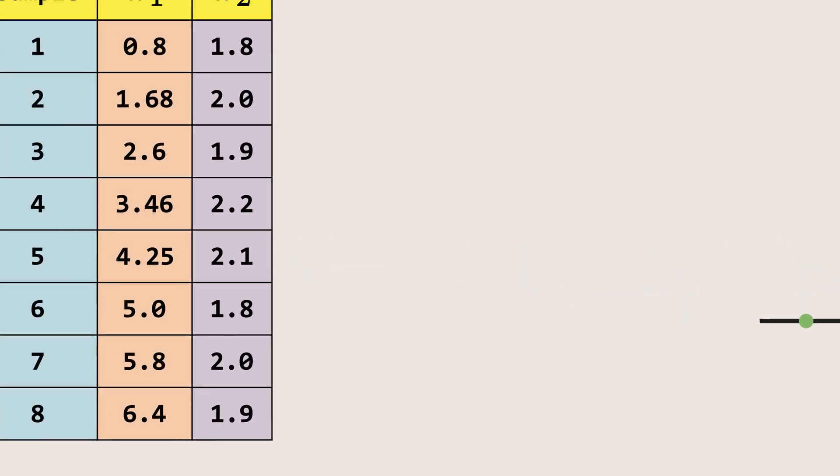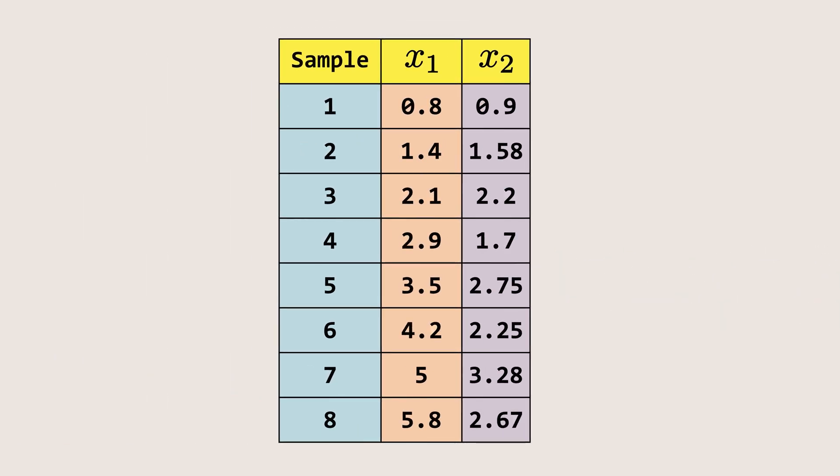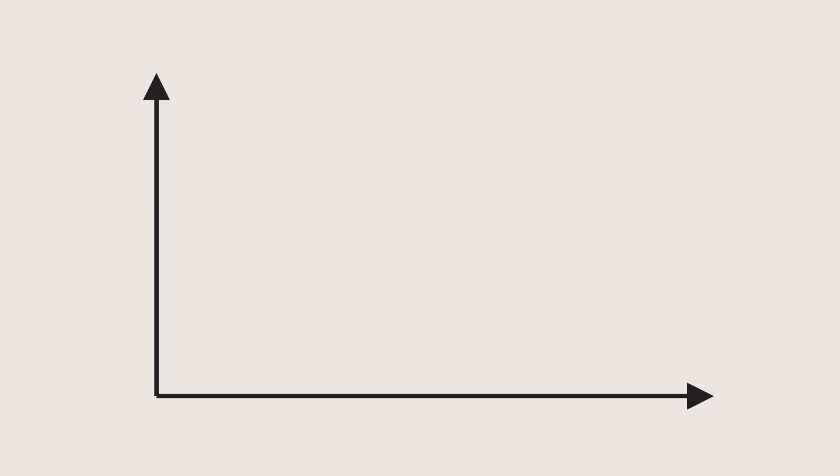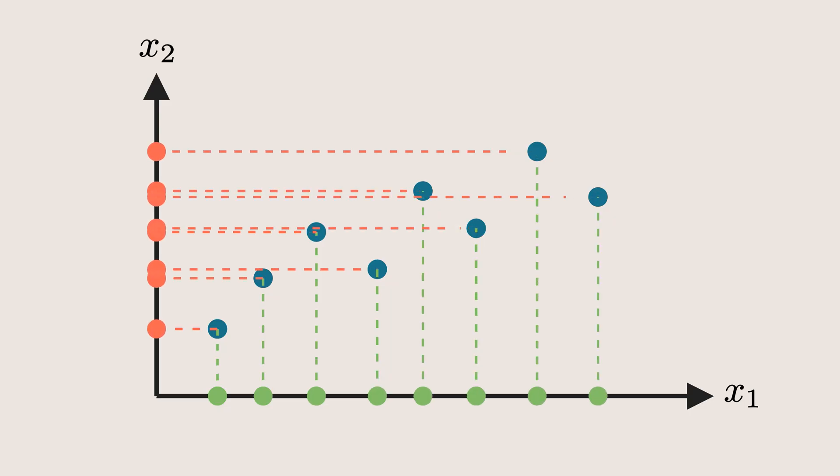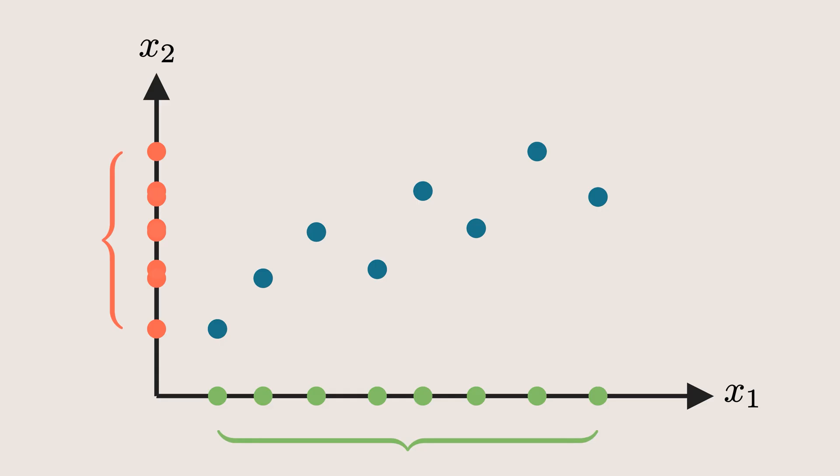Now let's modify our data set a little and plot these new data points. This time, you can clearly see that both features have significant variance. This means we can't simply drop one feature like we did earlier without losing a significant amount of information. So how do we deal with this kind of data set?